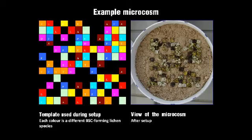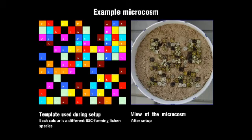In this slide we can see how one of these microcosms looks like. On the left, the color template represents the template we use for every microcosm, where every different color indicates a different species. On the right of the slide, we can see a picture of how a microcosm actually looks.